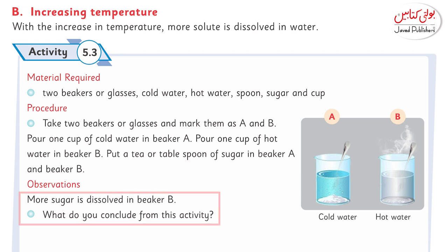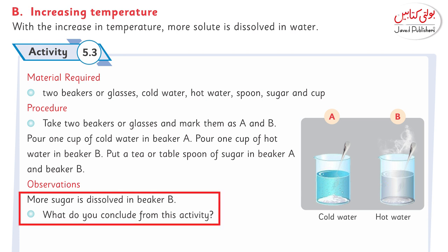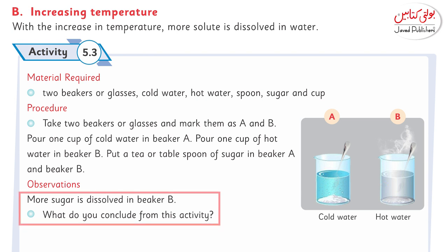Activity 5.3: More sugar is dissolved in beaker B. Why? Because beaker B contained warm or boiled water. As the temperature increases, the dissolving capability of the solute increases. This is why beaker B has more solute dissolved. Keep watching and keep learning.